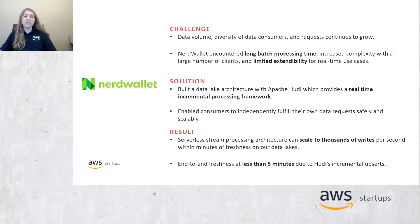Aspects of these reference architectures bring success to many companies, including NerdWallet — a company that provides the tools, information, and insight people need to navigate all of life's financial decisions. NerdWallet had an ever-growing data volume and experienced issues with scalability, long batch processing time, and complex transformation logic. Their workload contained millions of clients, with limited extendability for real-time use cases as they needed to scale to handle hourly updates of thousands of record upserts per second. Their solution was to build a data lake with a serverless stream processing architecture that scales to thousands of writes per second with minutes of freshness. With Hudi on Amazon S3, NerdWallet built a high-leverage foundation to personalize user experience, enabling consumers to build more sophisticated signals to provide clarity on all of life's financial decisions.